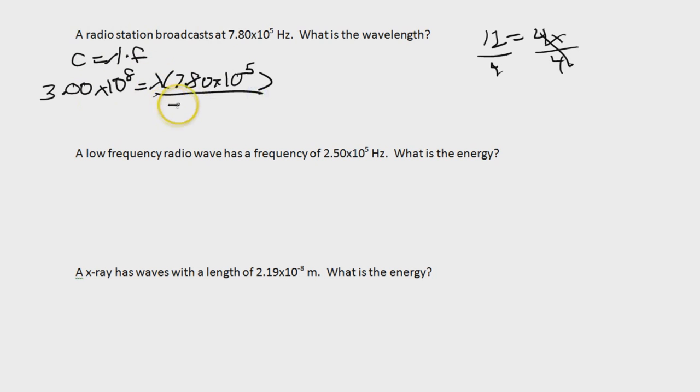I'm going to divide both sides by 7.80 times 10 to the 5th power. Do the same thing over here. 7.80 times 10 to the 5th power. That cancels out. So then I pick up my calculator, and I do my calculation, and I get that wavelength equals 384.615. And when we round this and put it into scientific notation, I'm going to move the decimal to the left one, two places. And so we get 3.85 times 10 to the 2nd power, and our units are meters. Very simple.